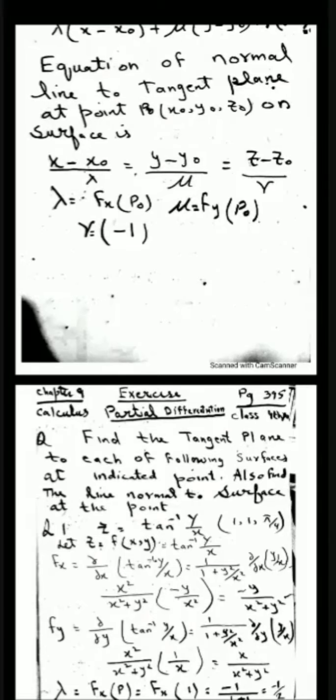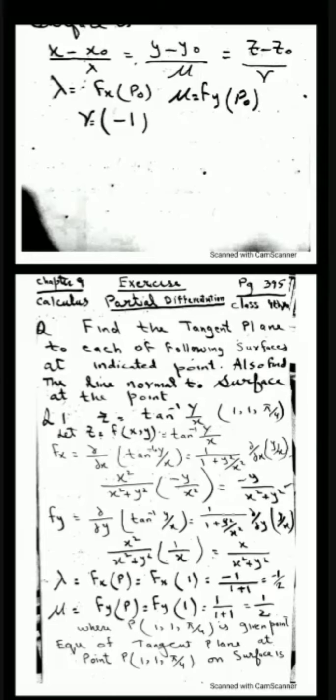Now for partial differentiation, we will look at Exercise 6 which has six questions. The first question says: find the equation of the tangent plane to each of the following surfaces at the indicated point, and also find the line normal to the surface at the point. Question number one: z = tan⁻¹(y/x), with point (1, 1, π/4).